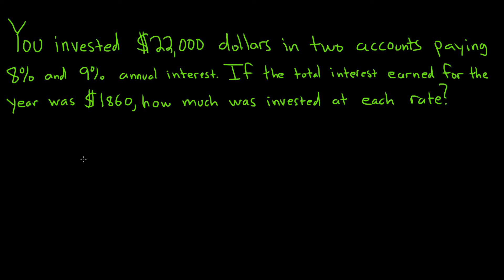You invested $22,000 in two accounts paying 8% and 9% annual interest. If the total interest earned for the year was $1,860, how much was invested at each rate? Let's go ahead and work through this one. Solution.